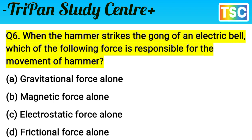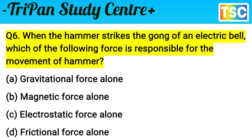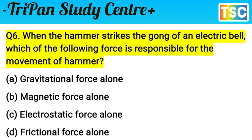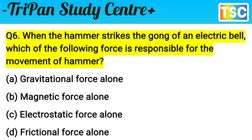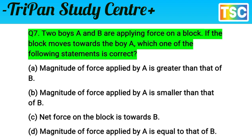Write down the correct answer in your notebook. Gravitational force alone is not correct here. Magnetic force alone is also wrong. Electrostatic force is correct because the electrostatic force is applied for the ringing of the electrical bell, and it is responsible for the movement of the hammer. Option C is correct.